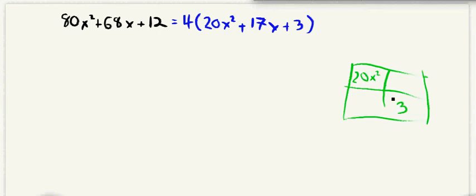And so now the next thing we do is we multiply these two numbers to figure out what we're going to put in those boxes. So we're going to do that 20 times three is 60. And so we need two things that are going to multiply to 60 that are going to add up to 17.